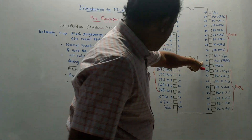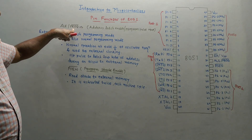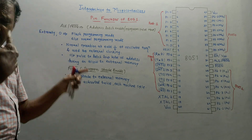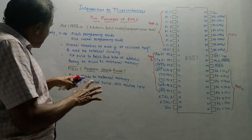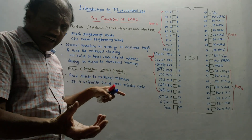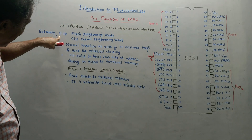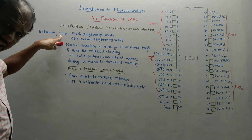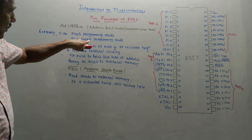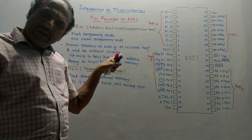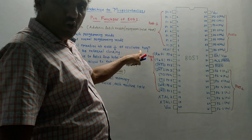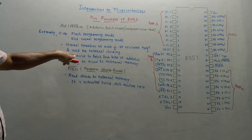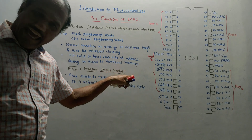Pin number 30 is ALE or PROG. ALE is address latch enable and PROG stands for program pulse input. Whenever the device is reset or switched on, it is checked whether any pin is externally connected to 0. If so, the device enters flash programming mode. If not, it enters normal programming mode. In normal operation, it operates at 1/6 of the oscillating frequency, and the output pulse from this pin is used to latch the low byte of address during an access to external memory.